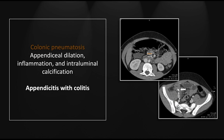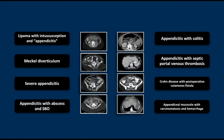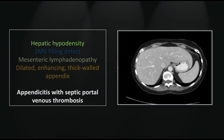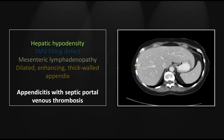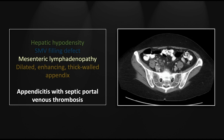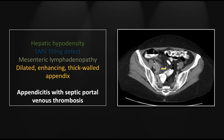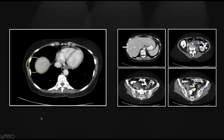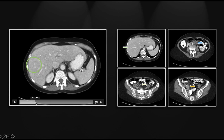Our next case is appendicitis with septic portal venous thrombosis. In the liver, there is a small hypodensity with a surrounding hypervascular, hyperdense triangle of increased enhancement related to portal venous obstruction — as we saw in the hepatic vascular lecture. In the superior mesenteric vein, you can see a filling defect. In the right lower quadrant, there is significant adenopathy, and in the pelvis, a thick-walled dilated appendix dropping into the right true pelvis.